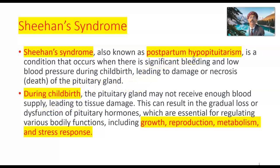Sheehan syndrome, also known as postpartum hypopituitarism, is a condition that occurs when there is significant bleeding and low blood pressure during childbirth, leading to damage, necrosis, or death of the pituitary gland. During childbirth, the pituitary gland may not receive enough blood supply, leading to tissue damage.